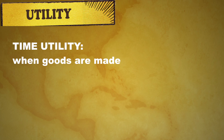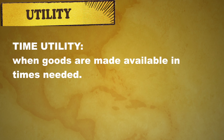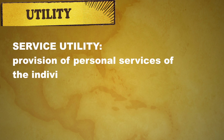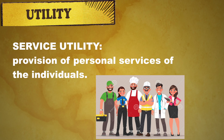Next we have time utility. Time utility is when goods are made available at times when they are needed. For example, holding stock of goods until they are required and making things available on time are examples of time utility. Next we have service utility. Service utility is the provision of personal services of individuals. For example, services of doctors, teachers, and engineers. A teacher comes to class and teaches students — this becomes the service derived by the students, and you get satisfaction. This type of satisfaction is called service utility.